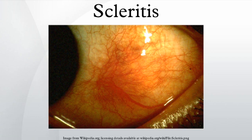Scleritis is best detected by examining the sclera in daylight. Retracting the lids helps determine the extent of involvement. Other aspects of the exam may be normal. Scleritis may be differentiated from episcleritis by using phenylephrine or neosynephrine eye drops, which causes blanching of the blood vessels in episcleritis, but not in scleritis.